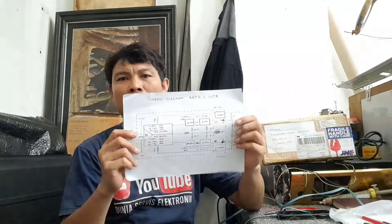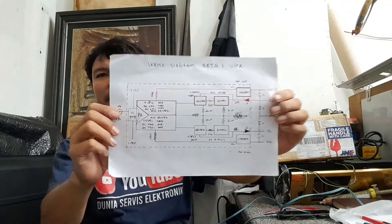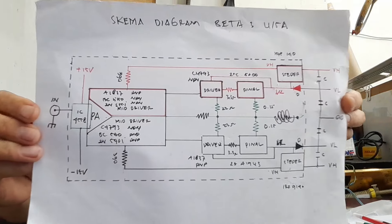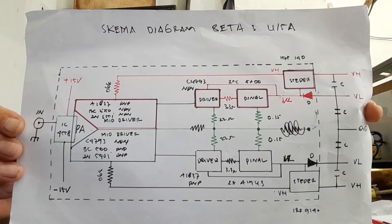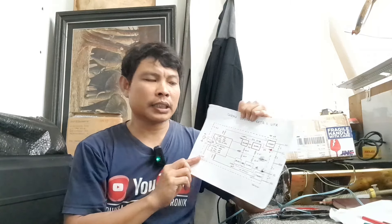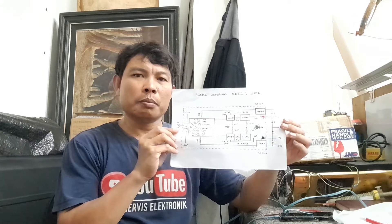Caranya, teman-teman bisa simak langkah-langkahnya, yaitu mempelajari diagram atau skema diagram mesin beta 3 U15A. Supaya nanti teman-teman bisa mudah cara membacanya atau cara penelusurannya, dari mulai tegangan power supply, dari mesin-mesin driver-nya, dan bagian mesin penguat awal di mesin beta 3 ini. Langsung saja simak video berikutnya.